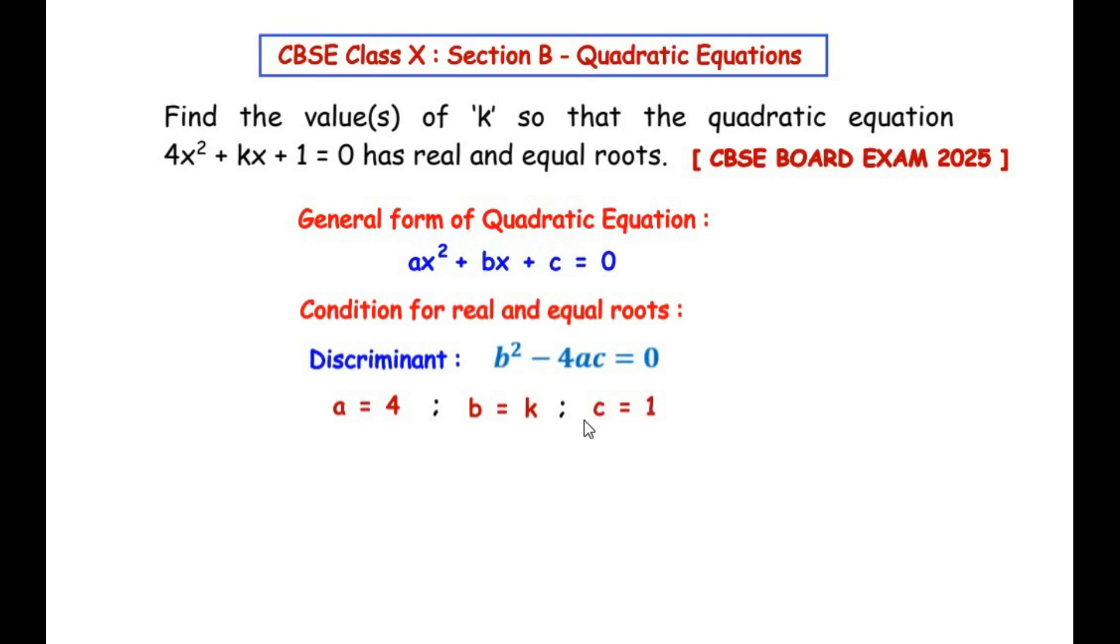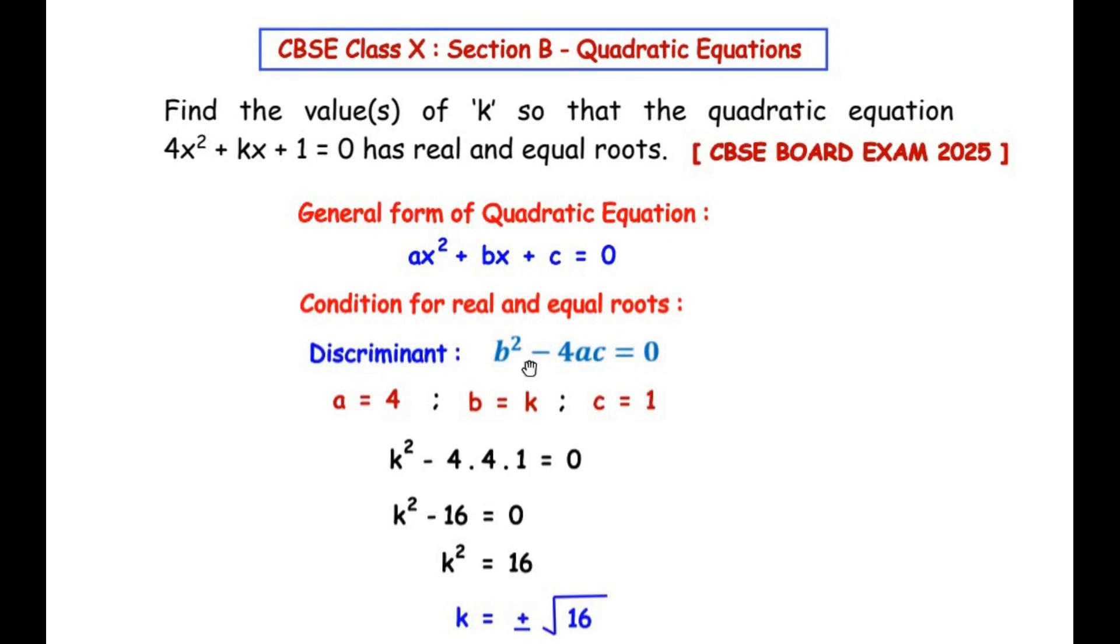Once we have got the values of a, b, and c, we are going to substitute their values in the discriminant formula. We get b² becomes k² minus 4 times the value of a is 4, so 4 times 4 times the c value is 1, equal to 0.